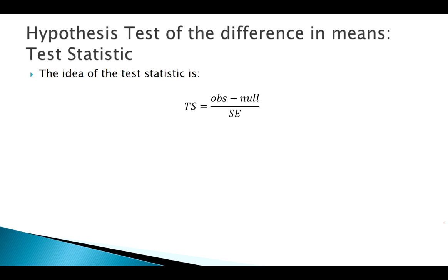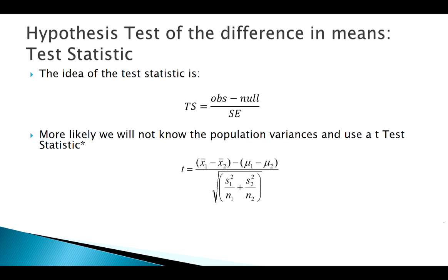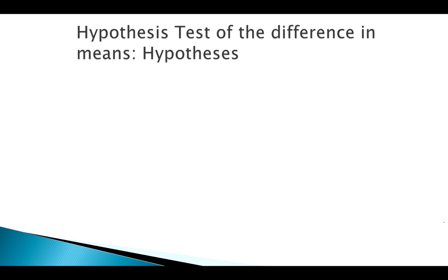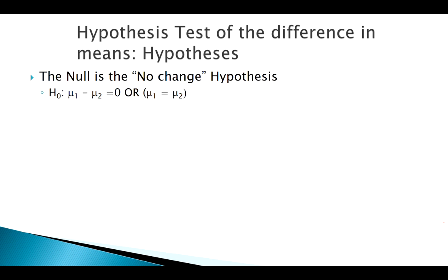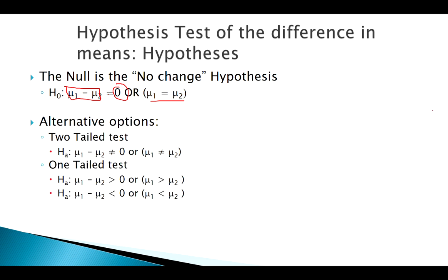Our test statistic has the same form but is now a t-statistic — instead of sigmas we estimate with s, and we assume the variances of the two groups are different. Our hypotheses for two-sample tests involve the parameter of interest mu₁ minus mu₂. In general, if we're looking for a difference, the claimed value is zero. So the null hypothesis is mu₁ minus mu₂ equals zero, or equivalently mu₁ equals mu₂ — we assume no difference to begin with.